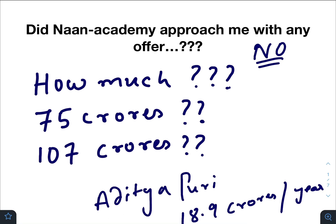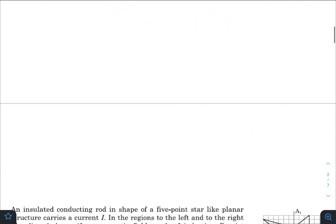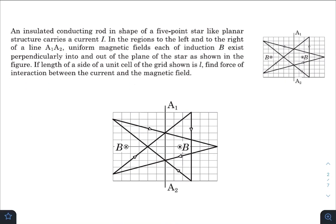Let's not waste much of your time and come to the solution of today's question. We have an insulated conducting rod in the shape of a five-star-like planar structure carrying current I. In the regions to the left and right of line A1-A2, uniform magnetic fields of induction B exist perpendicularly into and out of the plane of the star. The length of a side of the unit cell of the grid is l. We need to find the force of interaction between the current and the magnetic field.